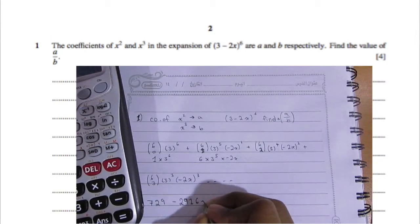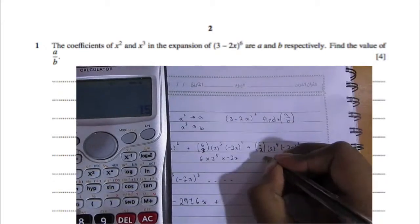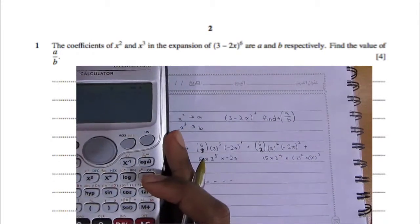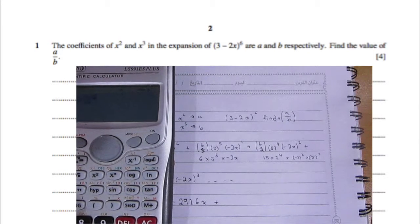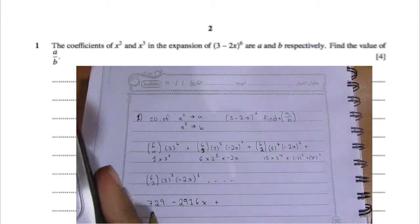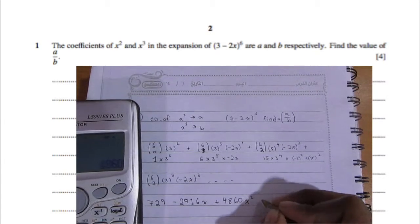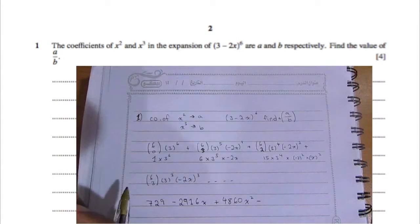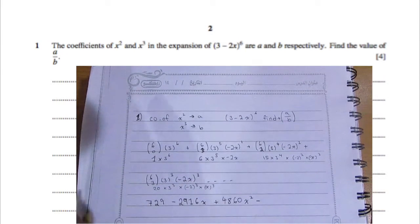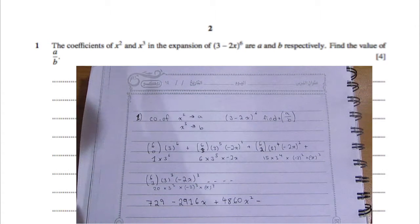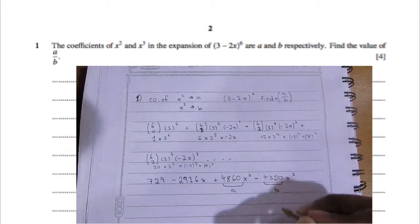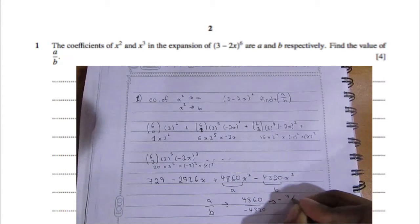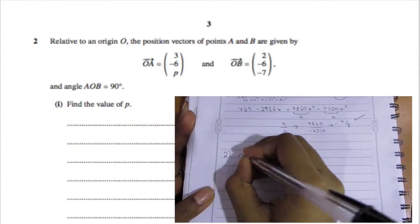You'll get 729 − 2916x, and then we calculate the next coefficients. The coefficient of x² is a = 4860, and the coefficient of x³ is b = −4320. Make sure you don't mess up the signs — that plays a really big part. Now divide a over b: 4860 ÷ (−4320) = −9/8. That's a total of four marks.